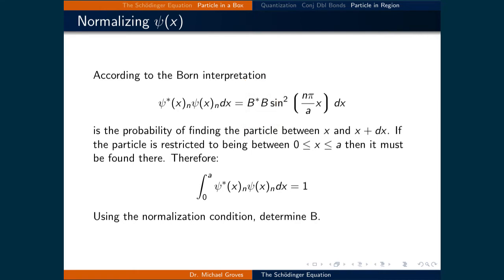Returning to the Born interpretation, psi-star psi times dx — in our case that's equal to b squared sine squared (n pi x over a) times dx. Remember, this is the probability of finding the particle between x and x plus dx. So if the particle is restricted to being between 0 and a, meaning inside our box, then the integral from 0 to a of psi-star psi dx must equal 1, meaning it is certain we will find the particle somewhere inside this box.